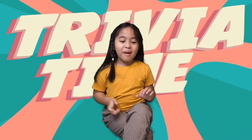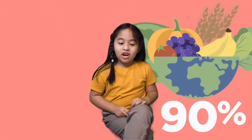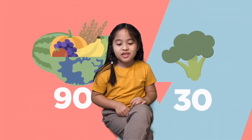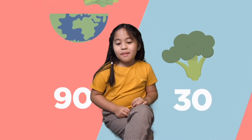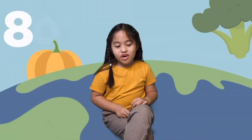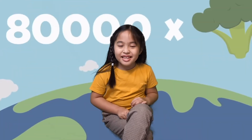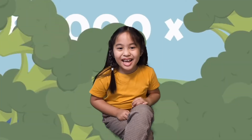Trivia time! Did you know that 90% of the food that we eat comes from 30 species of plants? But the earth has more than 80,000 species of edible plants?